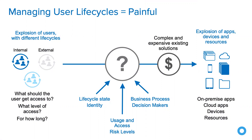This could include simple changes like attribute updates, title changes, maybe they move closer to headquarters and their physical address changes, or they get married and their name changes. Sometimes you have more complex things like a promotion — not only does their title change, but they also likely assume new responsibilities and get more access to more systems.